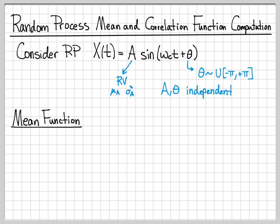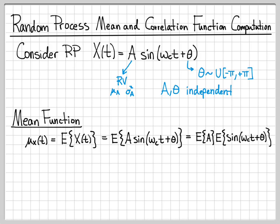So the first thing we want to do is compute the mean function of this random process. So the mean function we denote as mu x of t because we are dealing with the random process x of t. By definition that's the expected value of x of t, which in this case is the expected value of A sine of omega ct plus theta. That is equal to the expected value of A times the expected value of the sine quantity because A and theta are independent random variables.